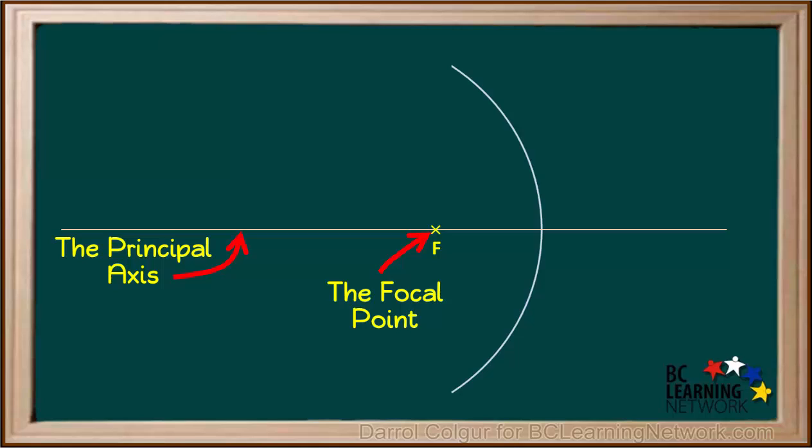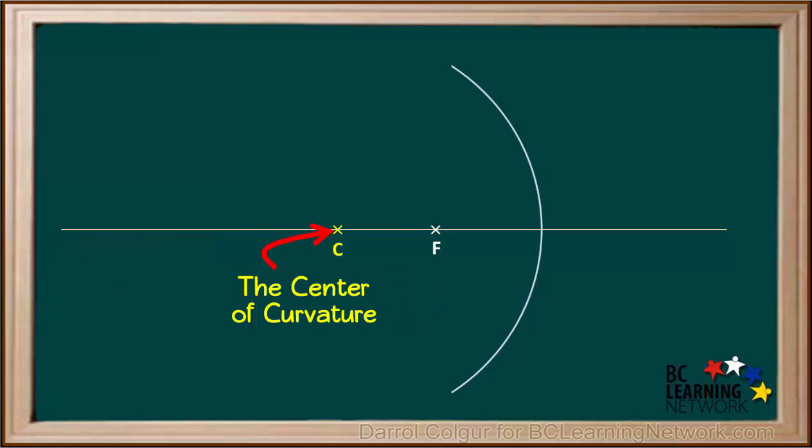Here's a diagram of a concave mirror showing the position of the principal axis and the focal point. Another important point in this diagram is point C, the center of curvature, which is twice the distance from the mirror as the focal point F.